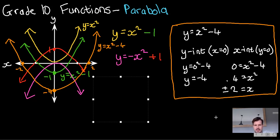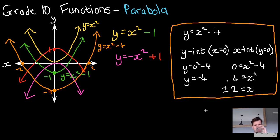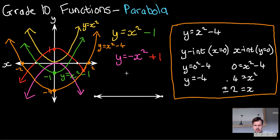That's the parabola. A good question was raised: how do you find the equation when you're given a graph with some points? Let's say we are given a graph with a y-intercept of minus 9 and x-intercepts of minus 3 and plus 3.